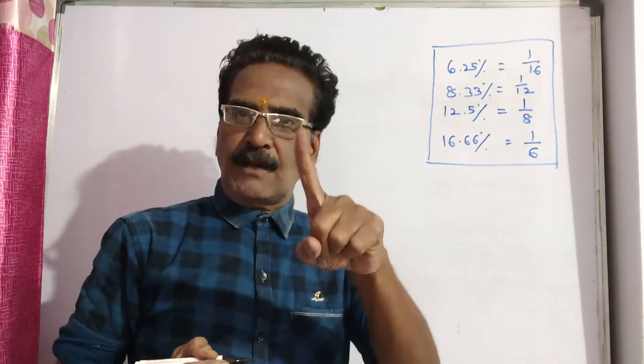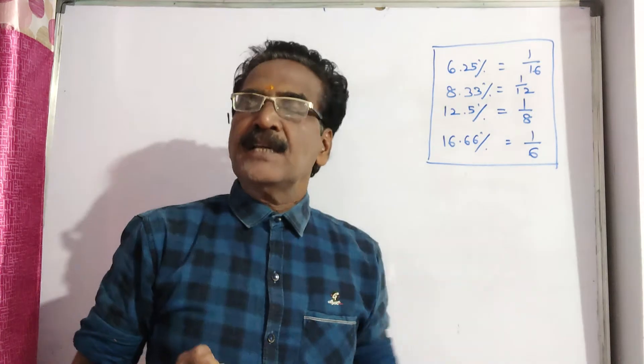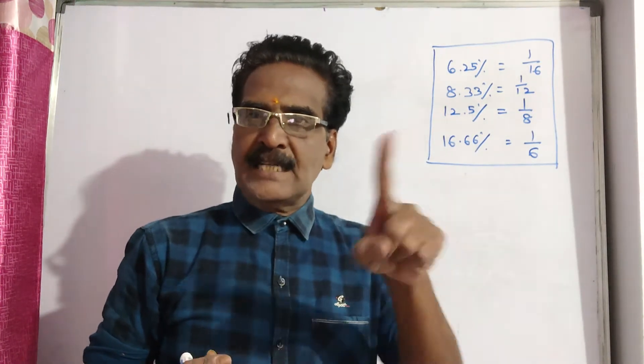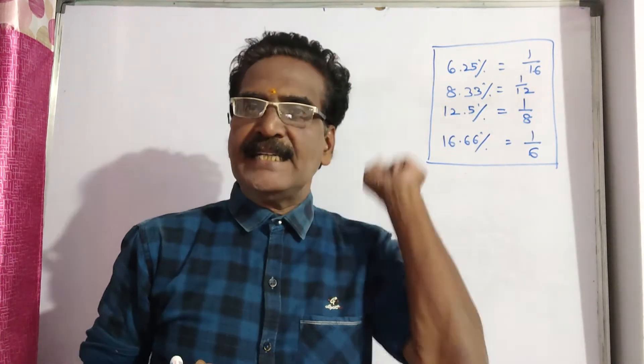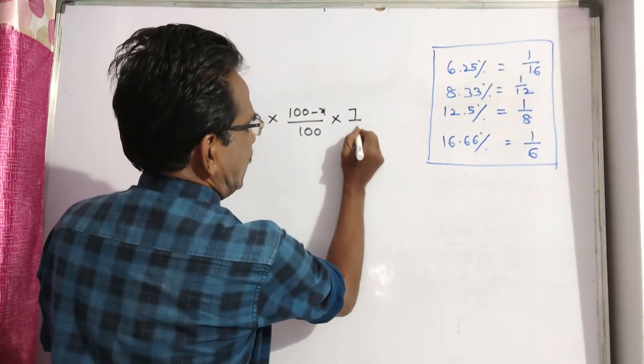Now, the second discount is 12.5%. 12.5% means 1 by 8. If 1 by 8 is the discount, 1 minus 1 by 8, 7 by 8 is the selling price. So let us apply the second discount also.